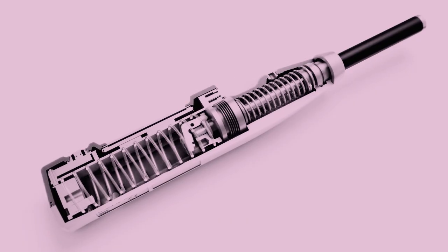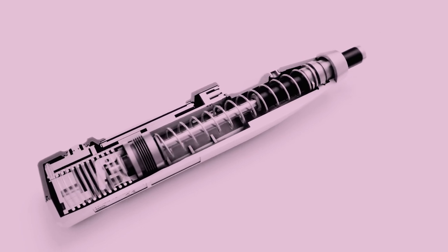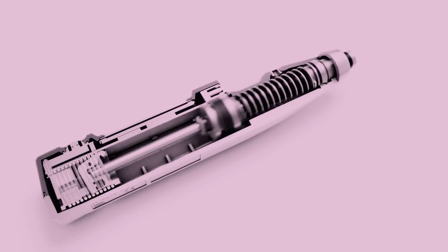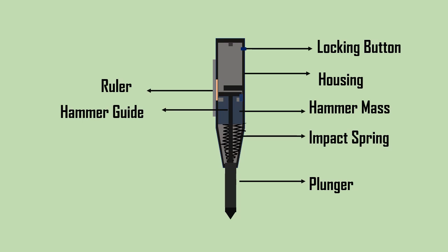The rebound hammer is a spring-controlled hammer that slides on a plunger within a tubular housing. The entire setup with its labels is shown on the screen.